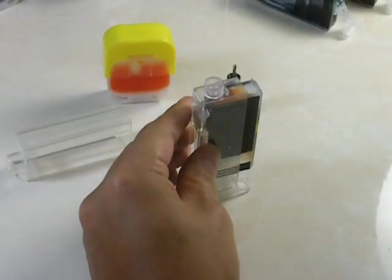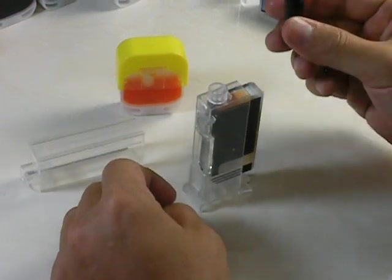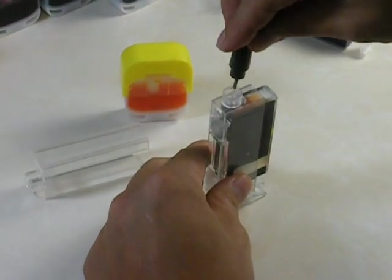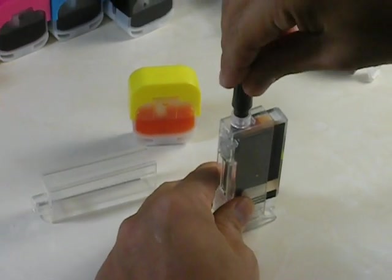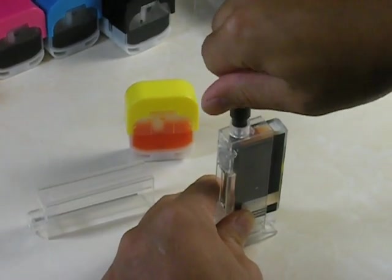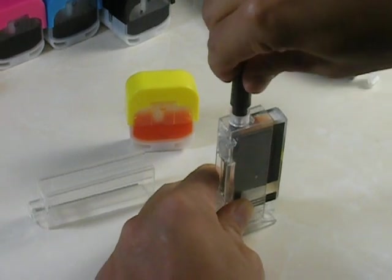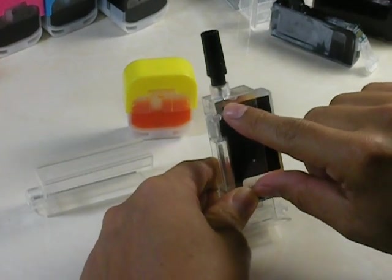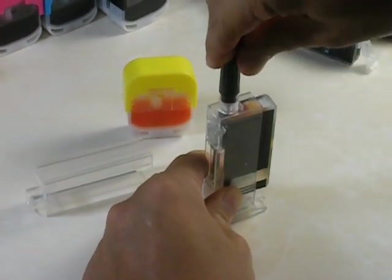Once that's locked into place, you're going to get your drill bit, and you're going to insert it into this hole. And once you insert it into this hole, you're going to turn clockwise, and you're going to start drilling a hole into this part of the cartridge right here. So, just go ahead and do that.